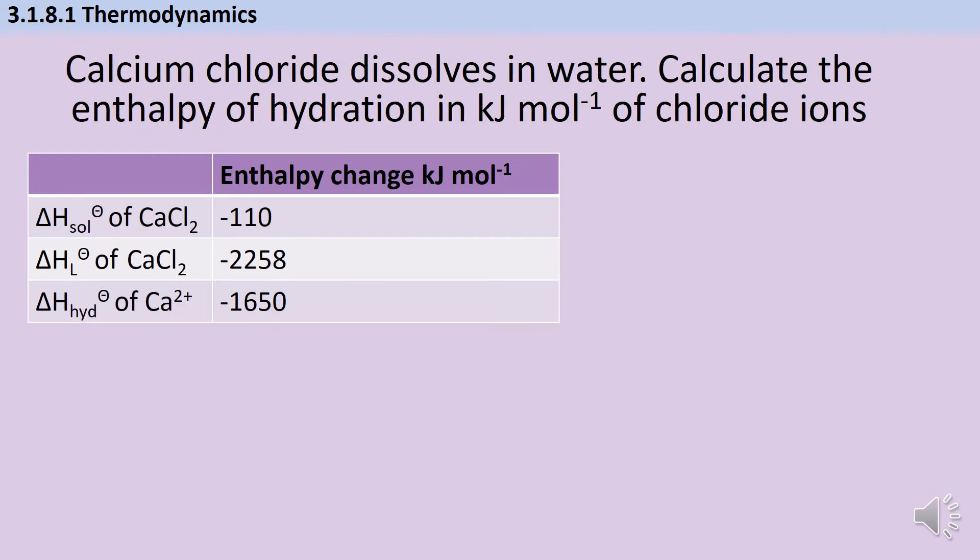Here's an alternative way of using a similar cycle. Now we've been given the enthalpy of solution and one of the enthalpies of hydration, but we've been given the enthalpy of lattice formation this time, and we're going to need to calculate the enthalpy of hydration for the chloride ions. So again, I'm going to start by writing out an equation that represents each one of these enthalpy changes.